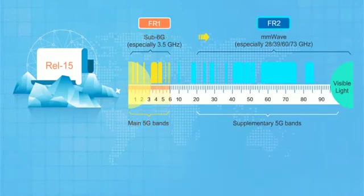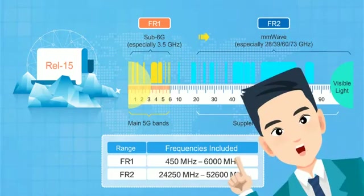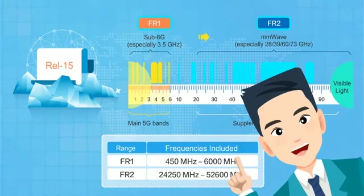FR2 is the millimetre wave spectrum — a high frequency band used for 5G bandwidth expansion. There is a lot of spectrum available in the FR2 range. The frequency resources on FR1 and FR2 are different, so 3GPP specifications stipulate different carrier bandwidths for the different frequency bands.